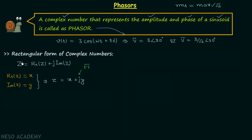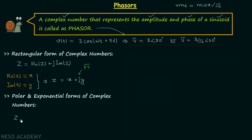Now we will discuss the polar and exponential forms of the complex number. In polar form, Z is written as r∠θ, where r is the magnitude and θ is the phase angle. The exponential form is Z equals r times e to the power jθ.